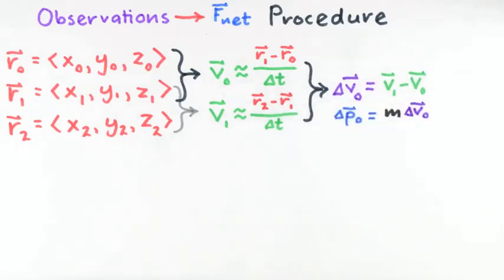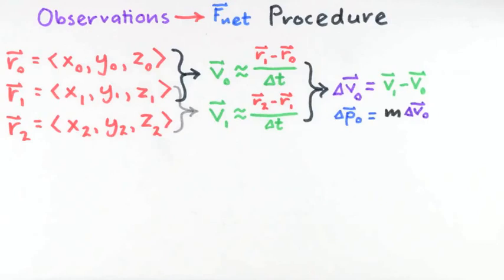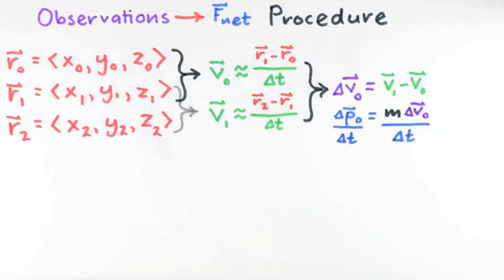Now by multiplying this delta v by m, we then obtain an estimate for the change in momentum, delta p. So now we can calculate our first estimate of delta p over delta t, as we have written here. And now, by applying our fundamental principle, Newton's second law, we also have our first estimate of the net force.